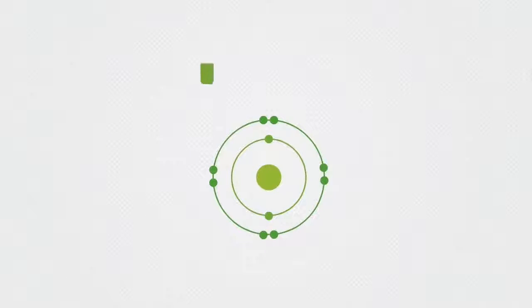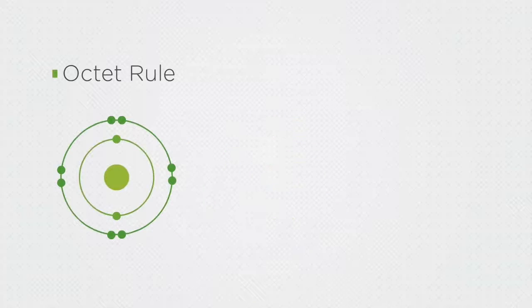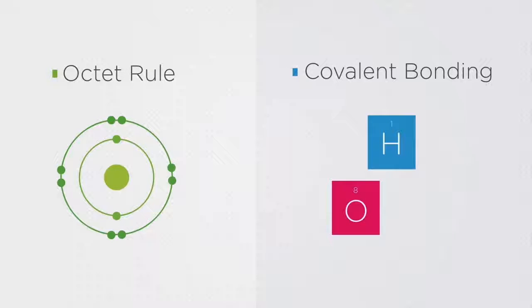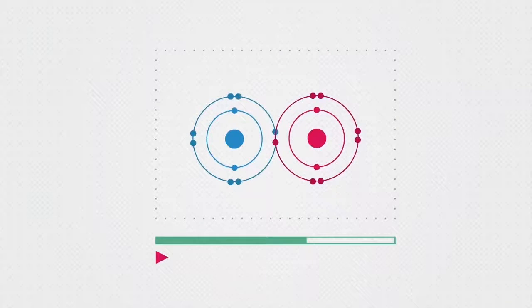In this video we are going to learn about the octet rule and how to construct dot and cross diagrams to show the covalent bonding in hydrogen, oxygen, and nitrogen. As seen in the video on how atoms bond, when two hydrogen atoms bond, the shells overlap.